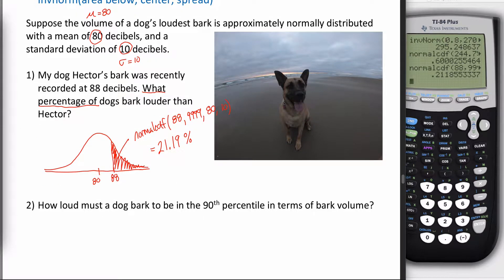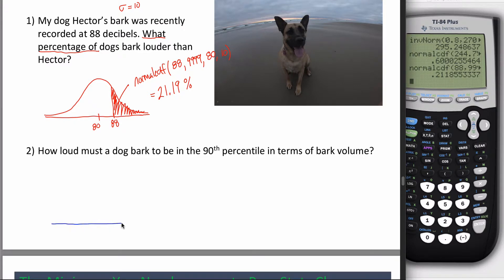Contrast that with this next one. This one says how loud must a dog bark? It's not asking me what percentage of dogs or what is the probability that a dog would bark louder than some amount. It's not asking for the area. It's asking how loud must a dog bark - my answer is going to be a number in decibels, not area. How loud must a dog bark to be in the 90th percentile? The 90th percentile is defined as the point such that the area below that point is 90%.